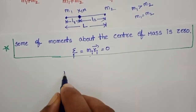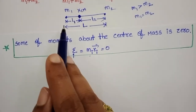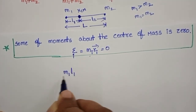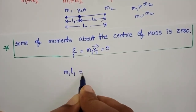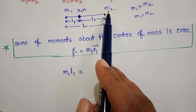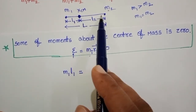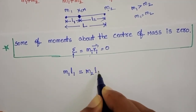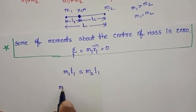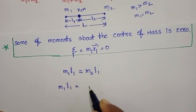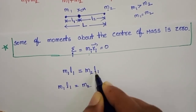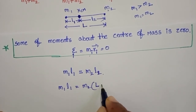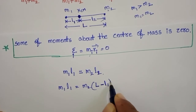The mass of the first particle is M1 and the distance of this particle from the center of mass is L1. So M1·L1 equals the mass of the second particle M2 multiplied by its distance from the center of mass, L2. So M1·L1 = M2·L2. In place of L2, we substitute the total length minus L1.